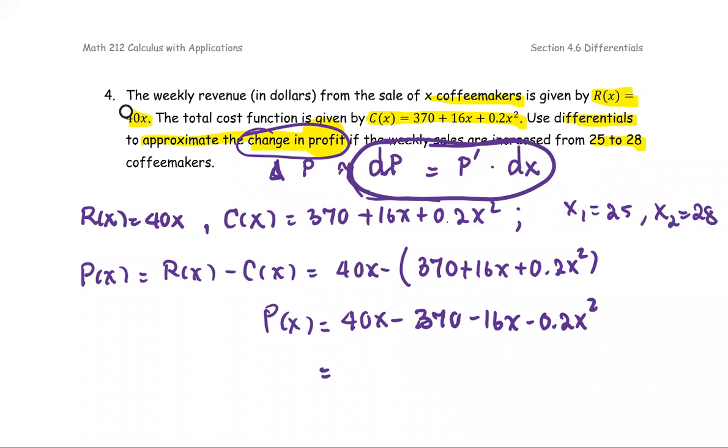Then the negative, the 40x and negative 16x are like terms. So we get 24x for the simplified form, these two terms minus 370 minus 0.2x squared as the profit function.